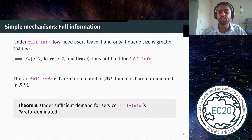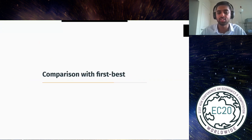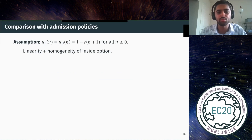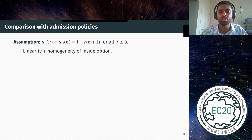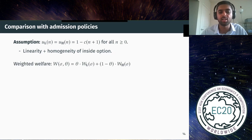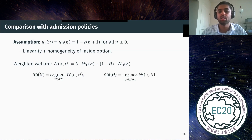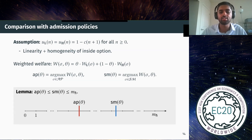To understand how much better information design can do, we compare against the first-best admission policies. We make the assumption that utilities for joining are linear, which yields stronger results, and also assume homogeneity of inside options, so the only heterogeneity among users is whether or not they have an outside option. We define a weighted welfare: for any weight theta on the low type, we consider the convex combination of the welfare of the two types. For each theta, we consider the optimal admission policy AP(theta) and optimal signaling mechanism SM(theta). It is easy to show that the threshold under the signaling mechanism for any theta must be higher than under the corresponding admission policy, following from classical results that users fail to internalize negative externalities.